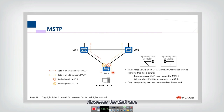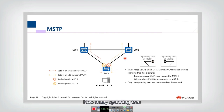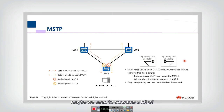Then the traffic can be divided and the load can be balanced, which is a better solution. However, how many spanning trees do we need to set up if we have many VLANs? We may need to construct many more spanning trees, consuming a lot of resources. That is not very good.